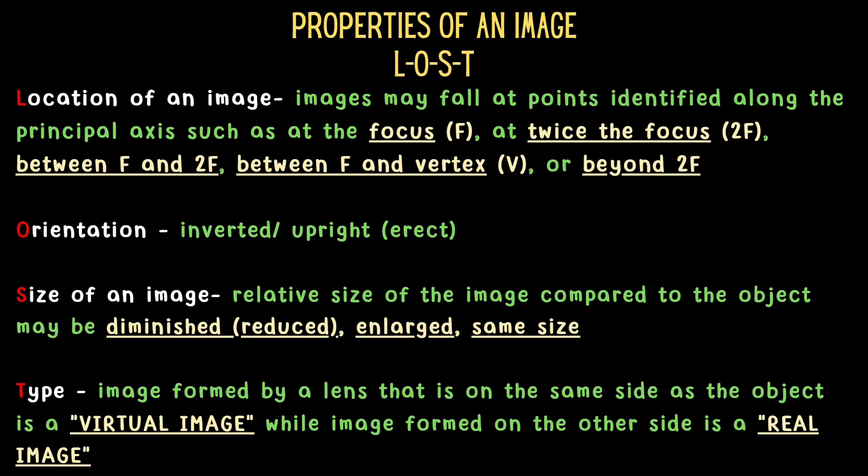Next, what are the properties of the image we found? We have what we call LOST. L stands for the location of an image that may fall at points identified along the principal axis, such as at the focus, at twice the focus, between F and 2F, between F and vertex, or beyond 2F. O stands for orientation of images. It may be inverted, or upright, or erect. S is the size of the image - it can be diminished or reduced, enlarged, or same size.